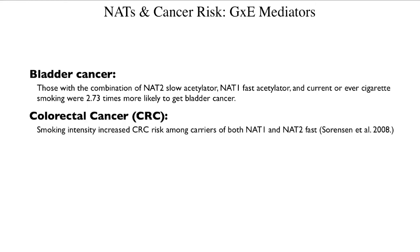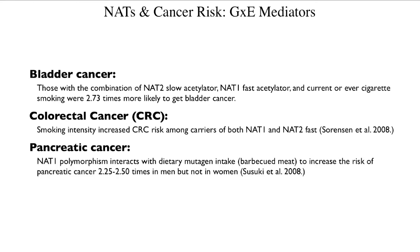For colorectal cancer, smoking intensity increased cancer risk among carriers of both NAT2 and NAT1 fast — the two genes were not interacting with each other as much, but smoking interacted with both of their states. For pancreatic cancer, NAT1 polymorphism interacts with a dietary mutagen intake — found in barbecued meat — to increase the risk of pancreatic cancer two and a quarter to two and a half times, and it does so in men but not in women.